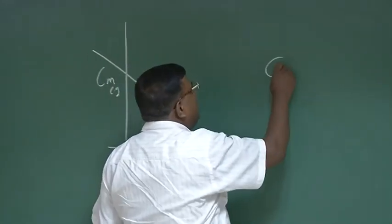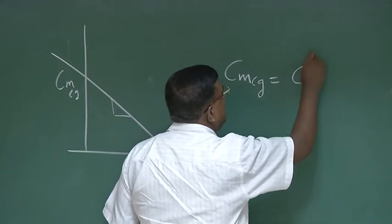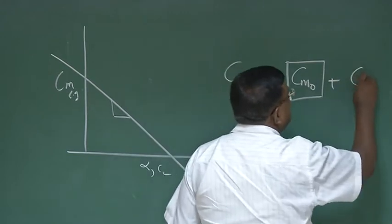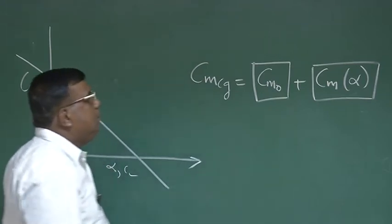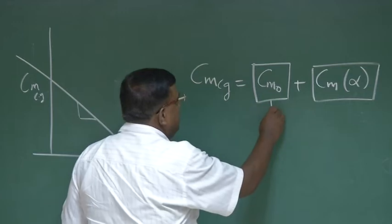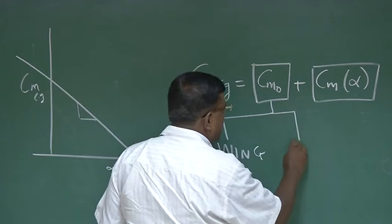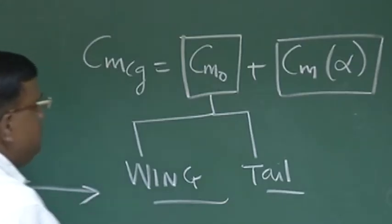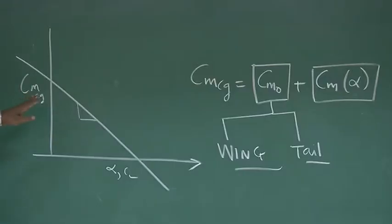I can write CM of the whole aircraft, CM_CG, as CM0 plus a contribution from angle of attack alpha — just like y equal to mx plus c. So who are the contributors to CM0? One contribution comes from the wing, and another comes from the tail. We will talk about CM0 first, then we will come to the slope.